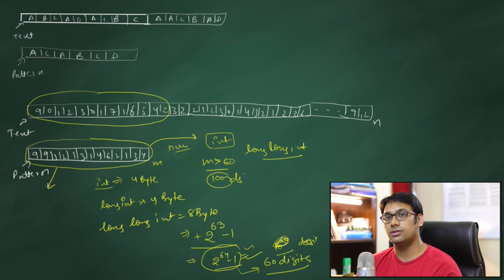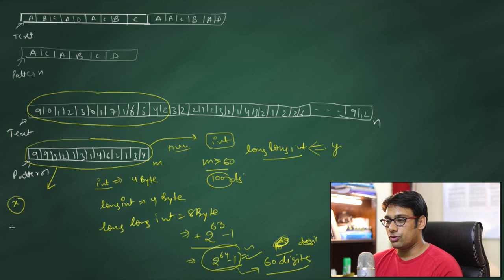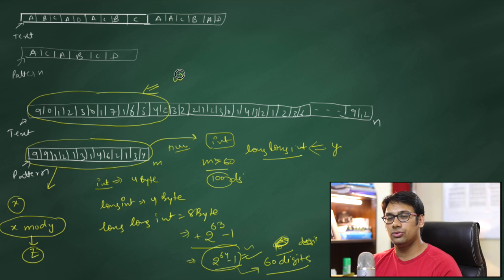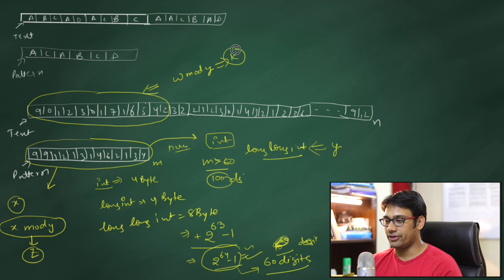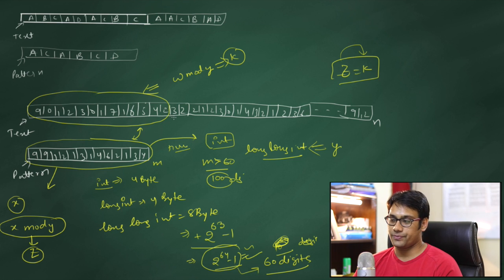The solution is: instead of storing the entire value, store a processed value using the modulus. Assume the pattern's numerical value is X and the largest value storable in a long long integer is Y. Compute X mod Y and store the result as Z. Similarly, find the text block's numerical value W, compute W mod Y, and store it as K. Then compare Z and K. If they match, there is a strong possibility the pattern matches that portion of the text. If they don't match, the pattern and text definitely differ.